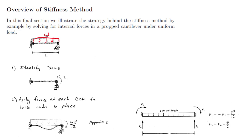Step one is to identify the degrees of freedom. We've done this already. There's only one possible way that the node can move, given an axial constraint, and that is rotation of the right-hand node.